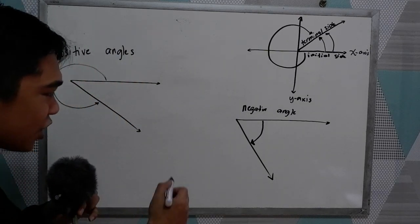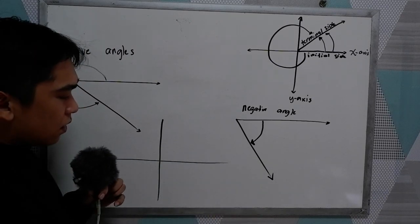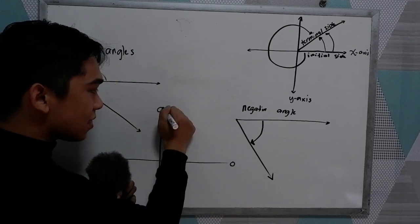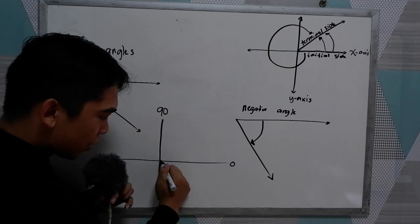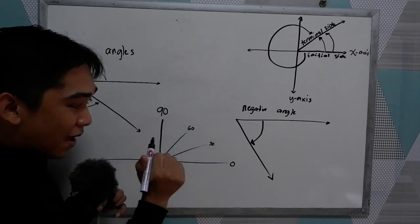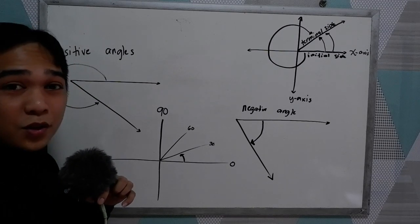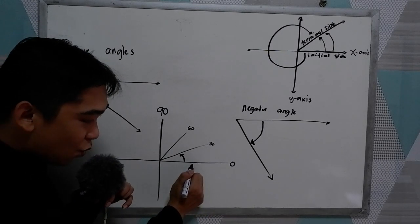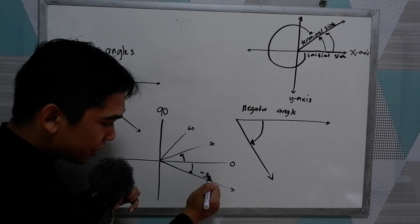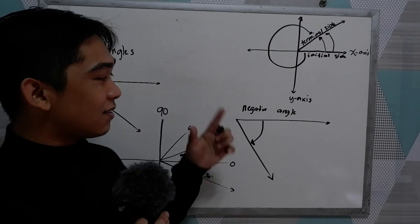So if we are going to locate in our Cartesian plane, let's say we are going to locate positive 30. We know that this is 0 and 90, so we have 30, then 60. So positive 30 is here. And if we are going to locate negative 30, of course clockwise, we get 30. This is the negative 30. So that is the positive angle and the negative angle.